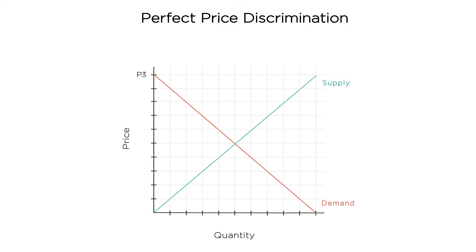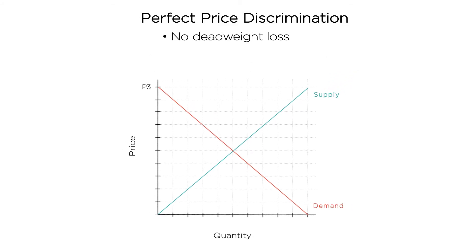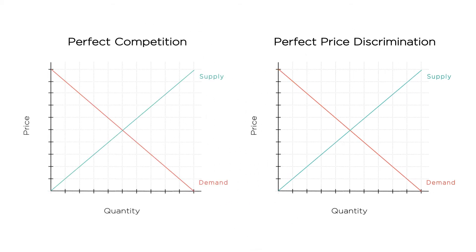Notice that when firms can price discriminate, there is no deadweight loss. Every possible trade that both parties want to make gets made, since the firm can adjust its price for each consumer based on her willingness to pay. As a result, social welfare is maximized under perfect price discrimination. Since it's a consumer-specific price, there's no poisoning effect on previous sales. When the monopolist lowers the price for one consumer, he need not lower the price for earlier consumers willing to pay more. So the monopolist will keep selling to every consumer until the price equals marginal cost — just like in the competitive equilibrium. That is, a perfectly price discriminating monopolist will sell the same quantity as in the competitive equilibrium.